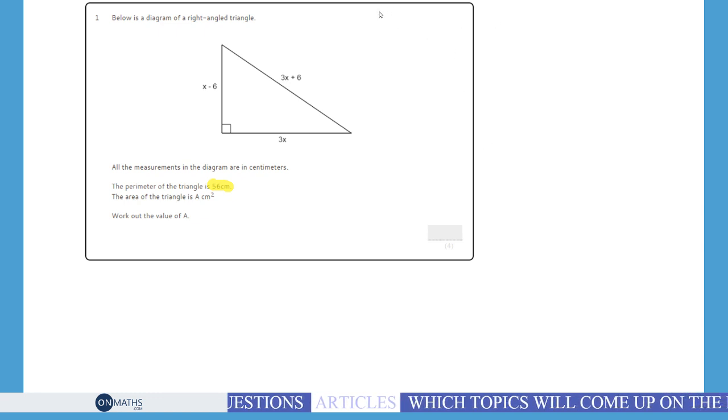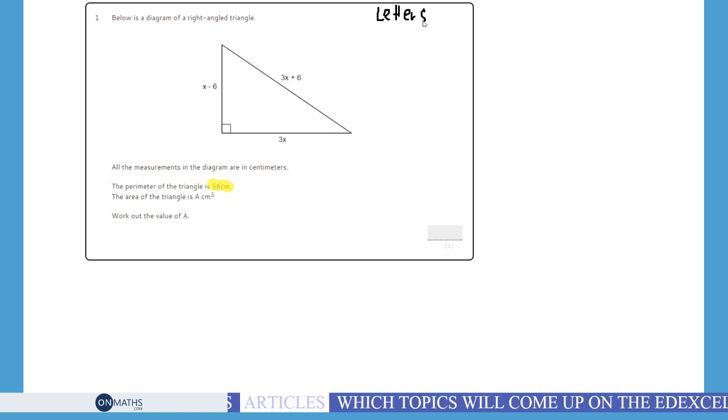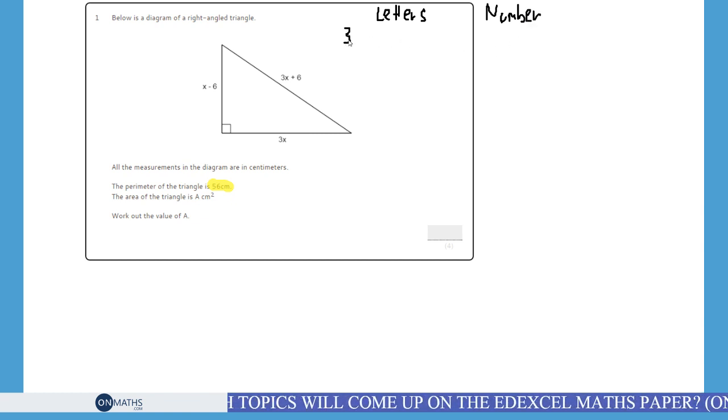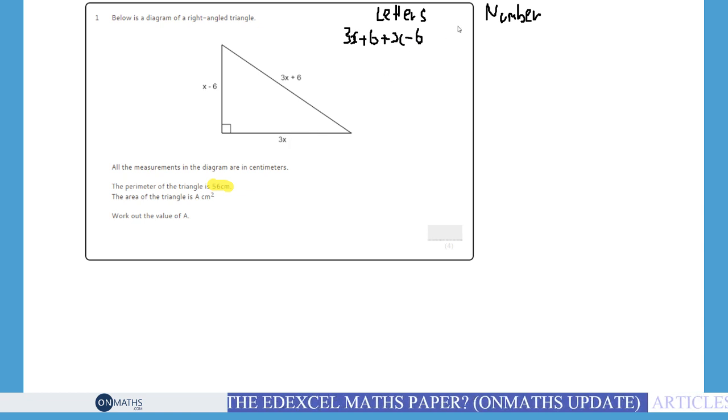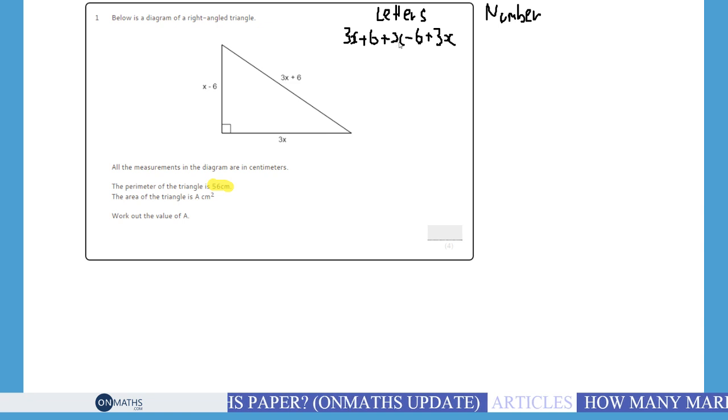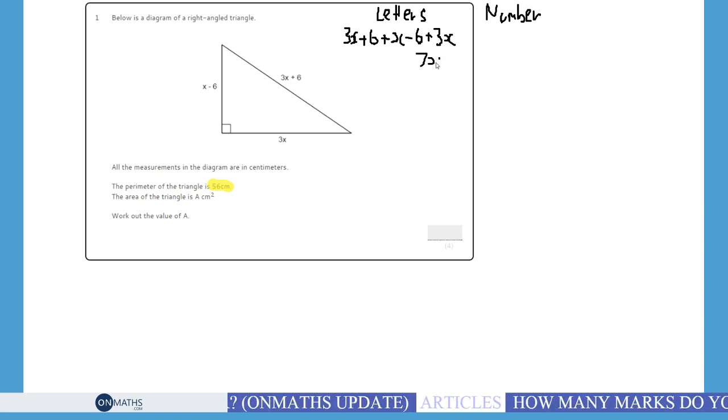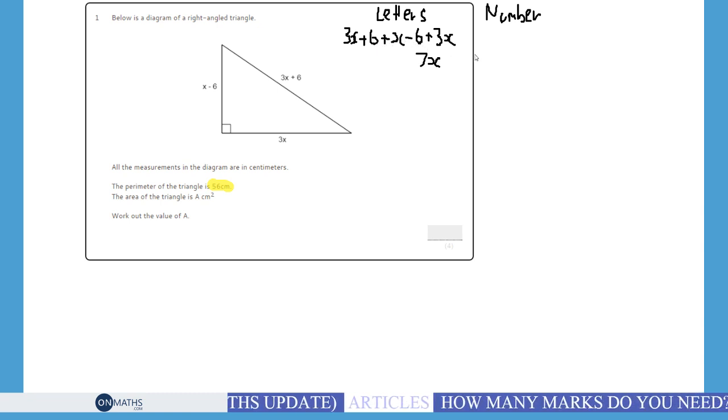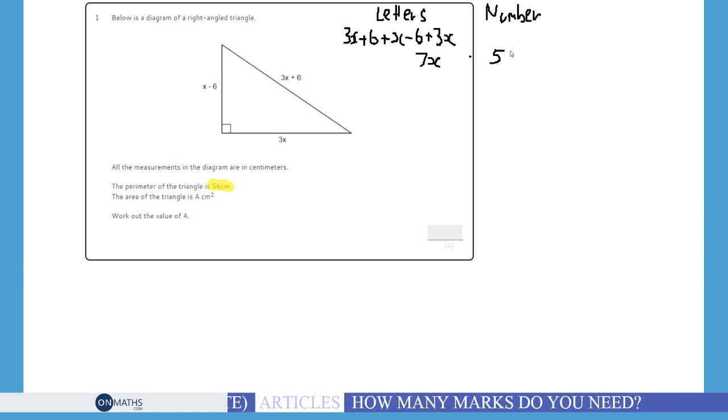So, we can work out the distance around the shape as letters and we do know it as a number. So, if I use this line for helping me with this. So, this is it as letters and this is it as a number. And we'll come back to that number bit in a second. So, as letters, it is 3x plus 6, this length here, plus x minus 6, plus 3x. And let's collect the like terms. So, 3x plus x plus 3x is 7x. And 6 take away 6 is nothing. As a number, it is 56. And because both this and this represent the perimeter, we put an equal sign there. Now, if you put an equal sign there, most exams, you get a mark for saying that 7x is equal to 56.